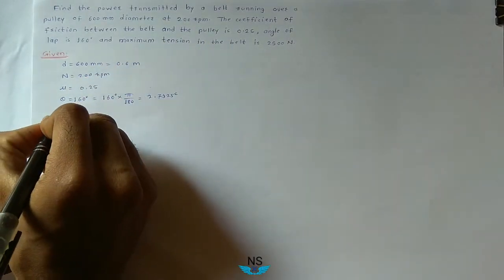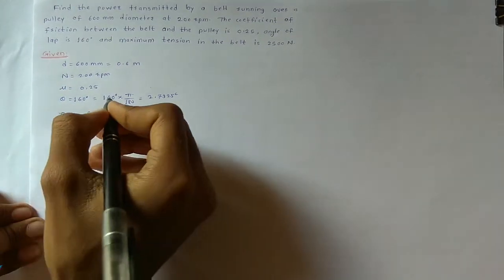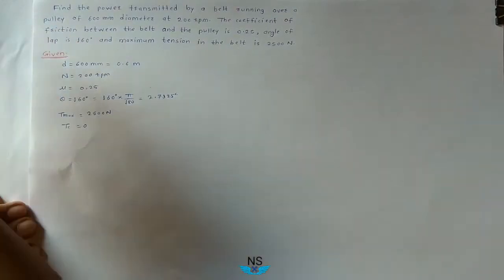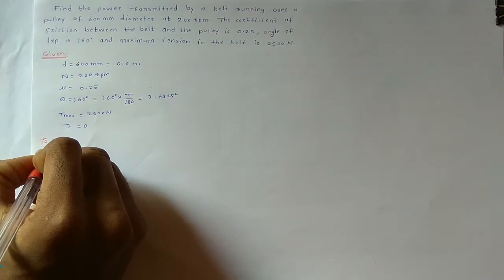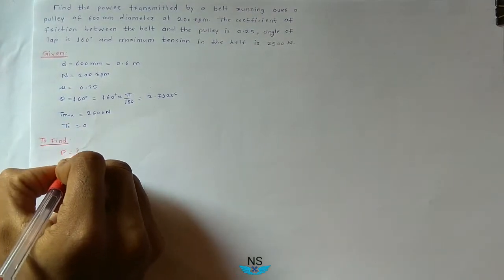Maximum tension in the belt Tmax is equal to 2500N. Tc is not given, Tc is equal to 0. So we have to find power. To find power transmitted by the belt drive, P we have to find.